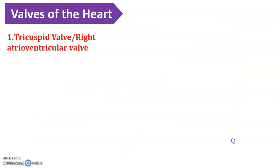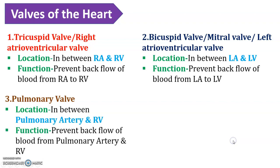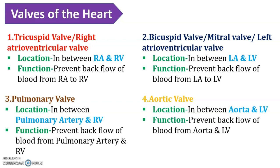Let us discuss the walls present in the heart. There are four different valves: tricuspid, bicuspid, pulmonary, and aortic. Please pause and write the locations of these valves in your notebook — it is very important for your exam. The common function of all these valves is to prevent the backflow of blood, ensuring uniform blood flow. In the exam, questions may ask about the locations of the pulmonary, tricuspid, bicuspid, or aortic valves.